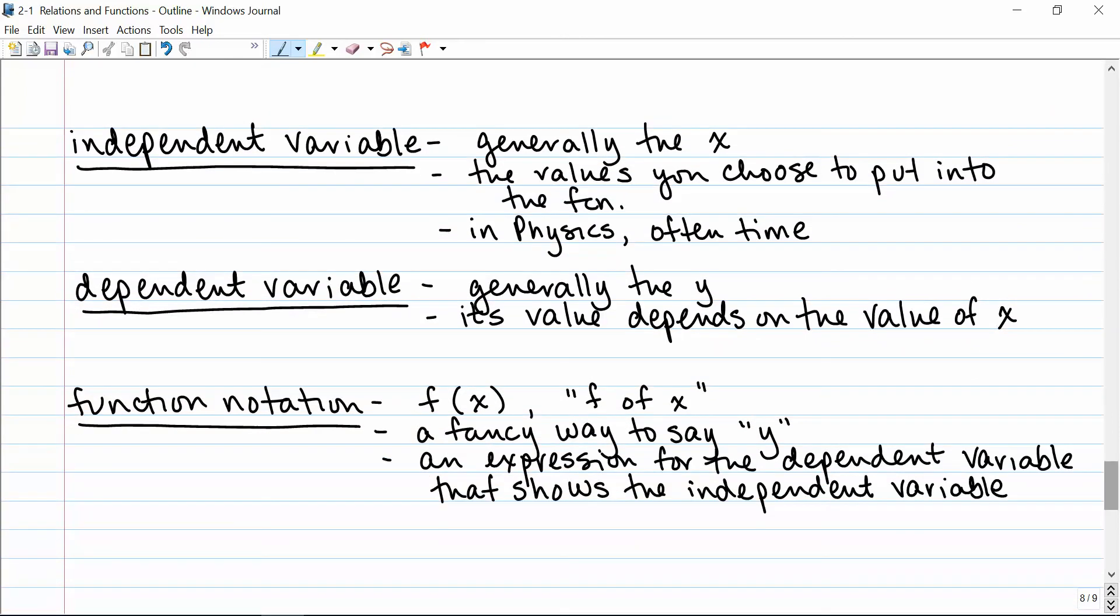You may also recall this from algebra 1. We have something called an independent variable, which is generally the x. And those are the values that you choose to plug into the function. In physics and in other sciences, the independent variable is often time. The dependent variable is generally the y. And it's called that because its value depends on the value of x. You probably also recognize this function notation from algebra 1. It's f with an x in parentheses. And we say that f of x. It's just a fancy way to say y. And it's a good expression because it shows that the dependent variable actually depends on the independent. You have the independent variable couched inside the function notation here.